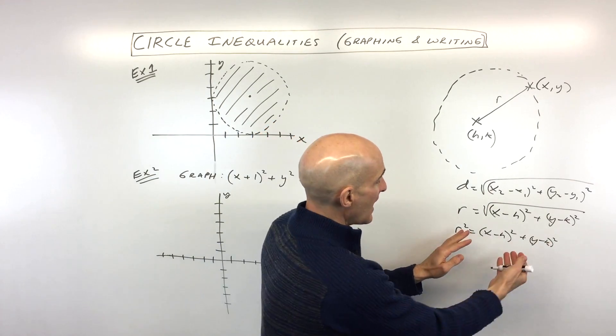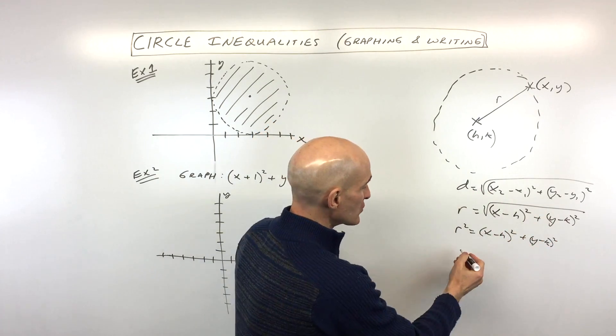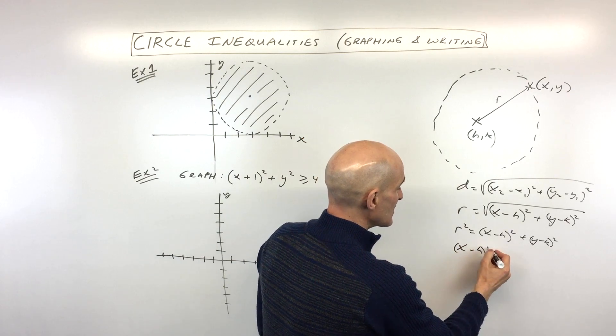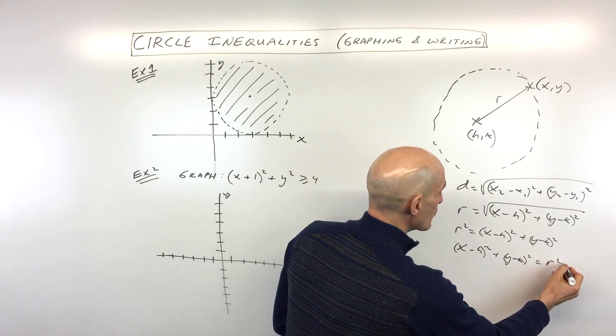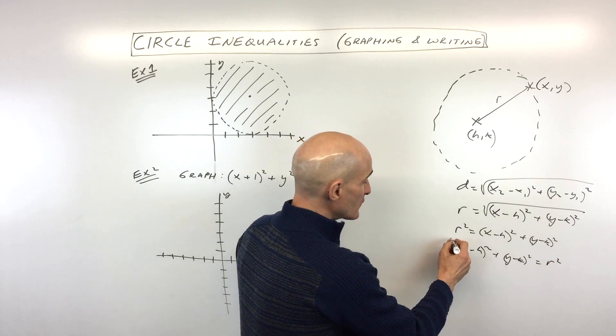Now when you learn the distance formula, they actually flip this over. So let's go ahead and rewrite this slightly. So x minus h squared plus y minus k, the quantity squared, equals the radius squared. So this is our equation for a circle.